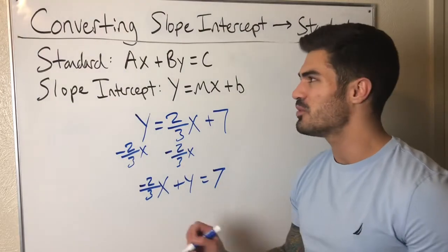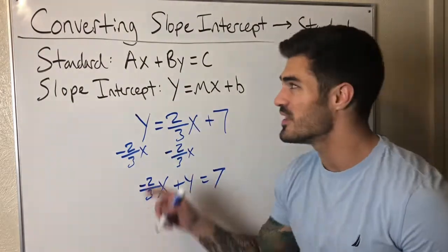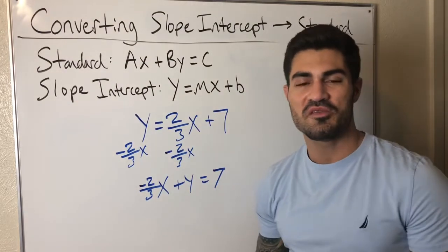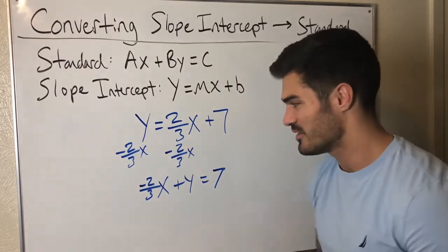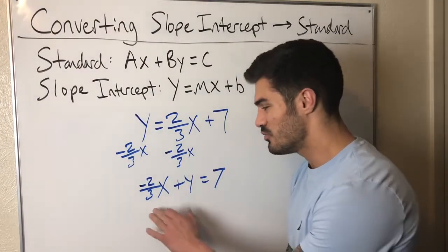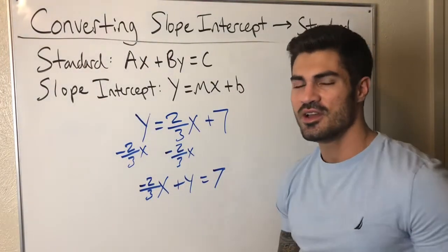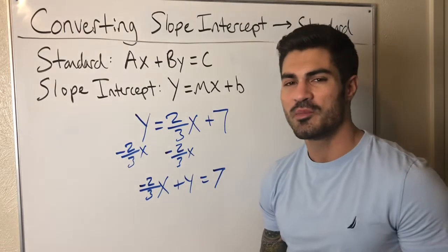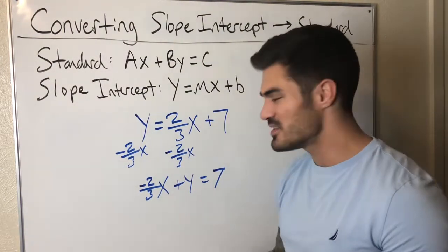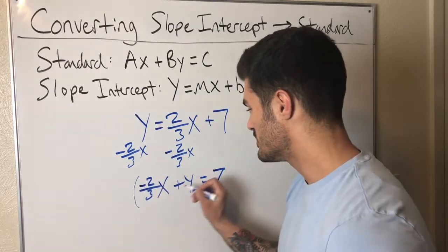So now I'm very close. There's just one thing that we have to note about standard form and that's that a, b, and c are all integers, meaning there can't be fractions or decimals or anything like that. And look, I have a fraction here. So I have one more step and that's to get rid of this fraction. How can I do that? By multiplying both sides by three. By multiplying both sides basically by the least common denominator, which in this case is three.